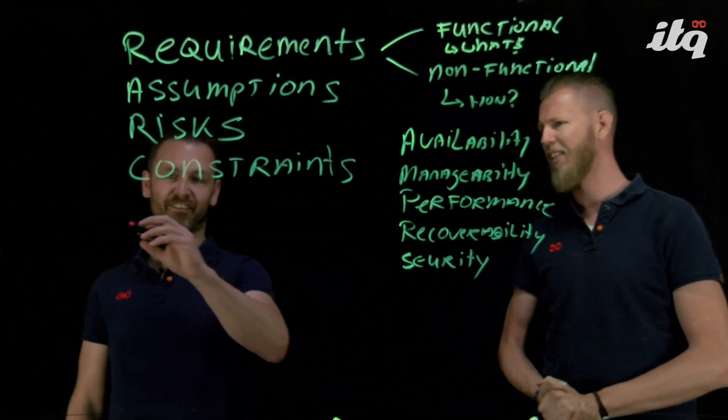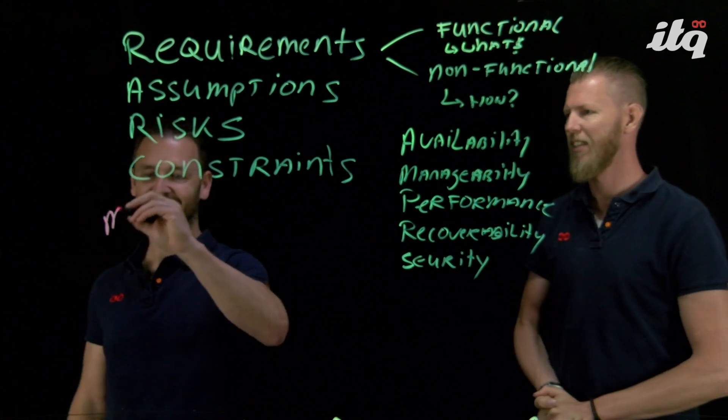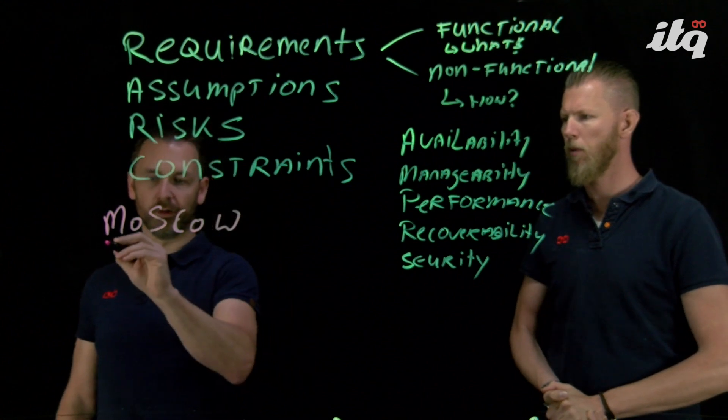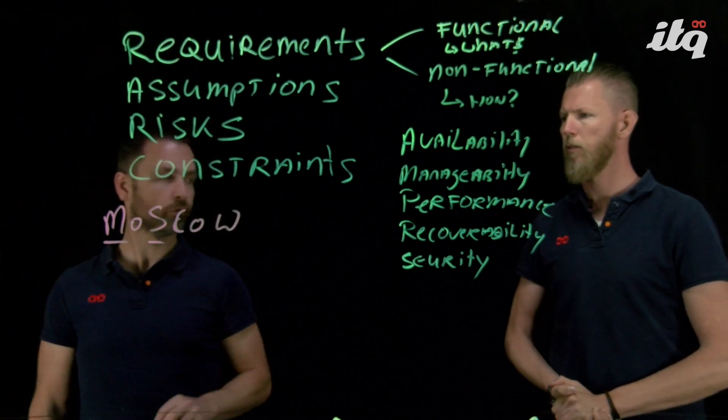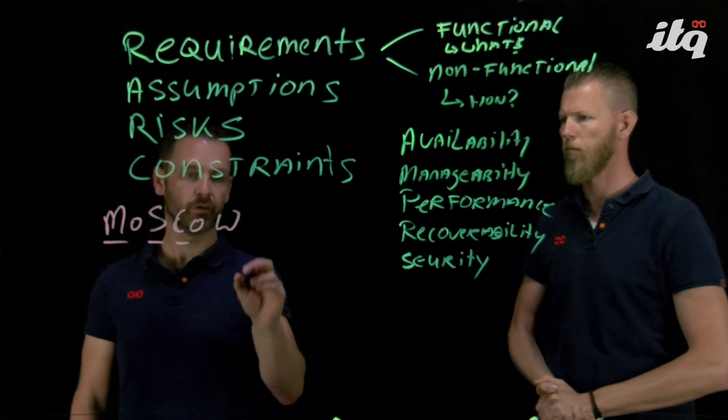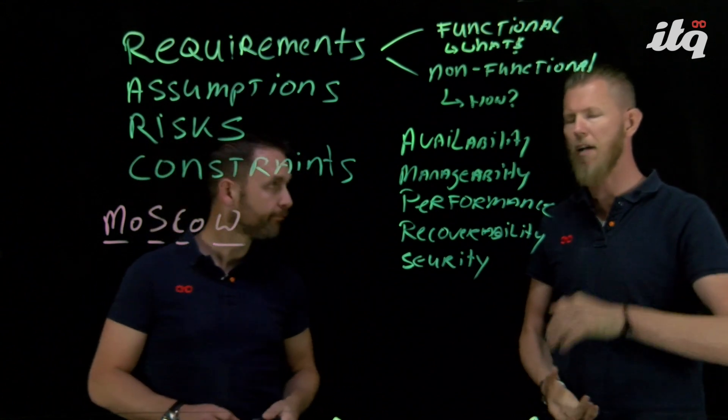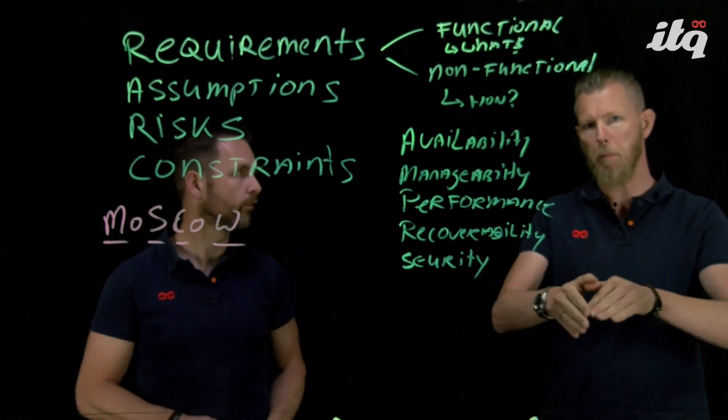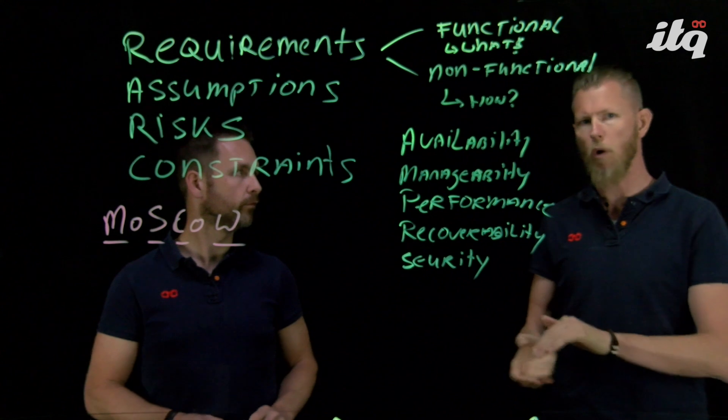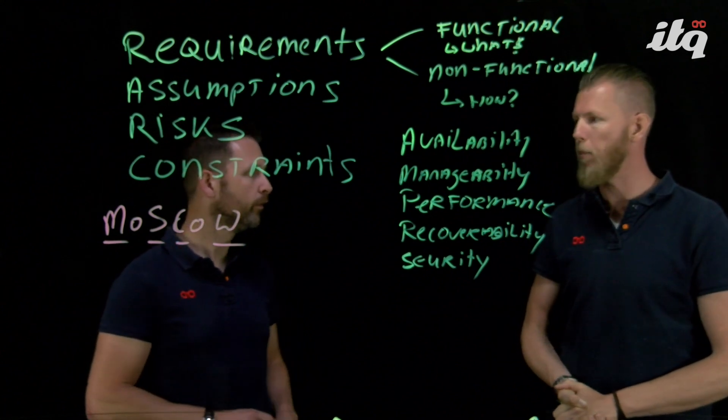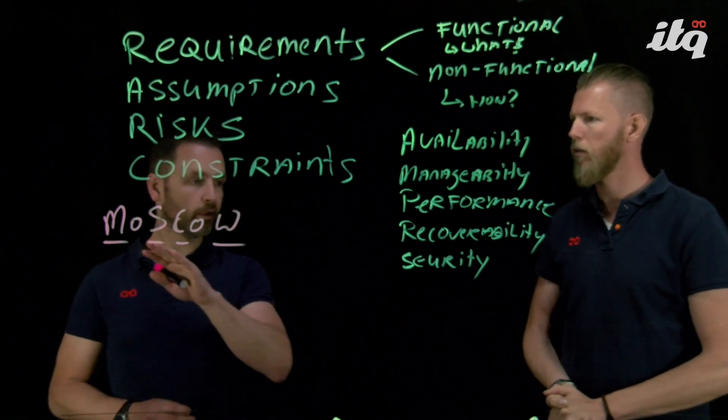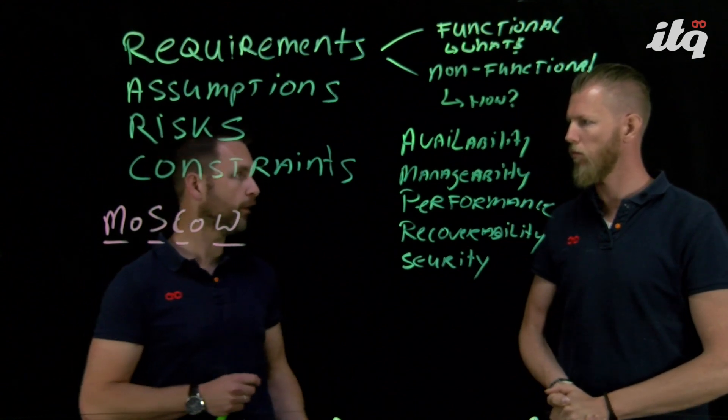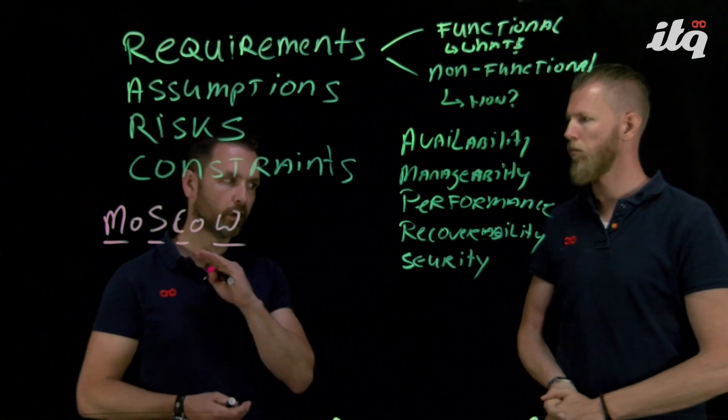The system should be available or should be able to still run in case of a data center failure, or still run in case of any other type of failure, or from a security perspective should be able to still continue in case of a data breach. But it's good to characterize or to give a certain weight on those requirements, and that's why we use the MoSCoW system. It's the must-haves, your should-haves, your could-haves, and your won't-haves.